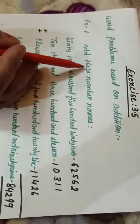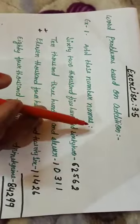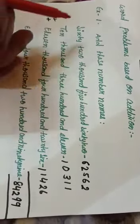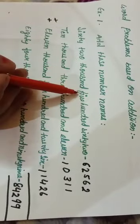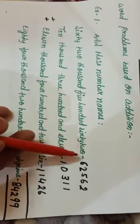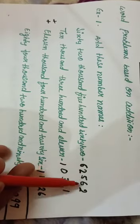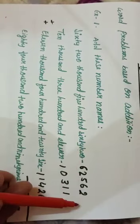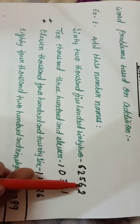Example number 1, add these numbers. In this question, you have to write the numbers name in numerals. Then you have to add it. See, 62,562. In numbers, you have to write here 62562.